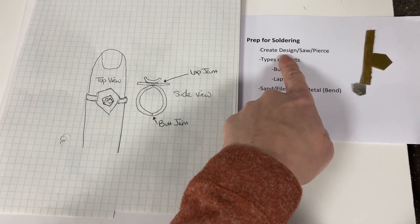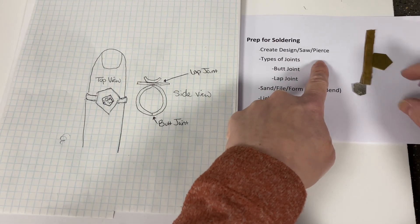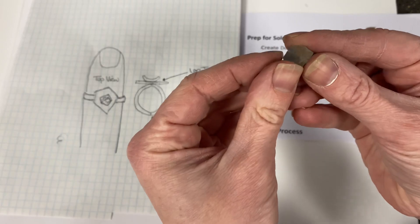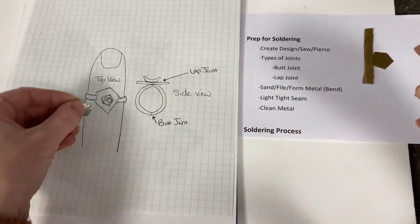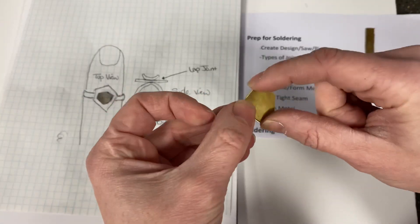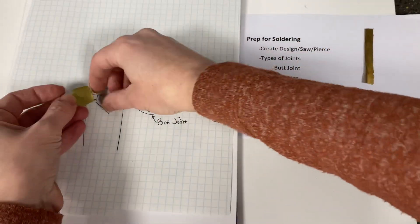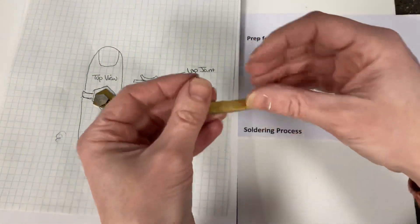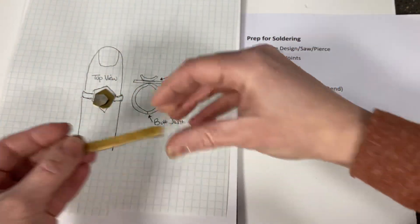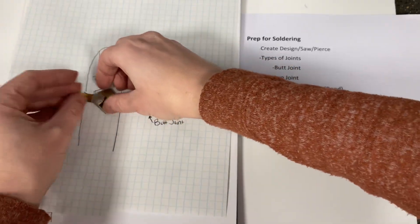First thing you've got to do is create your design, saw your shapes, and pierce them. So I have my top curved piece with my texture that goes right there. I have my flat brass piece that would be the piece that goes right there. And then I have my band piece. So I sawed all of those out and I've already started to clean up the edges.